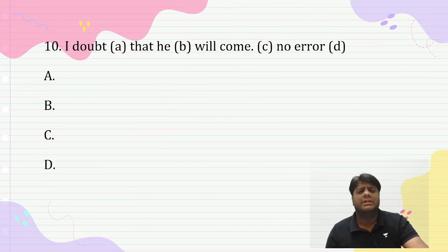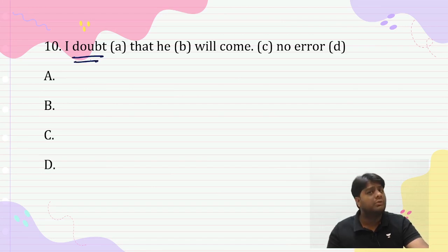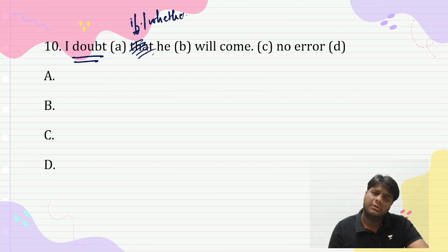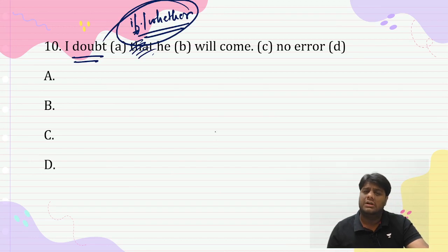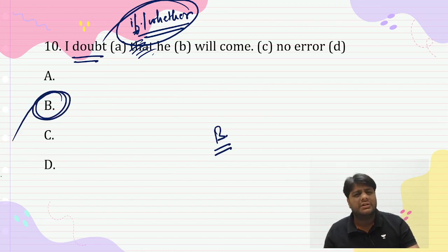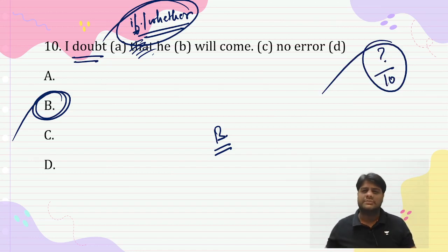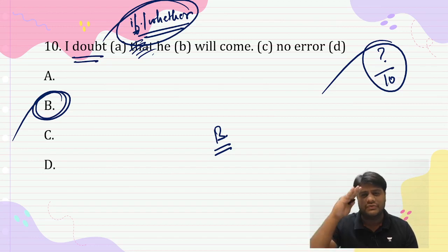'I doubt that he will come.' When there is genuine doubt, the conjunction should be 'if' or 'whether', not 'that'. Either use 'I doubt if he will come' or 'I doubt whether he will come'. Answer is clearly B part. I hope everything is clear. Update me with your score out of 10 in the comments, like, subscribe, and share as much as possible. See you all in the next session!